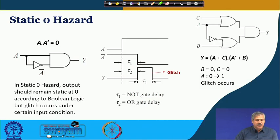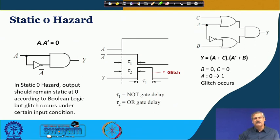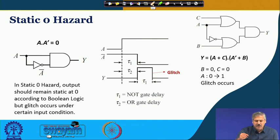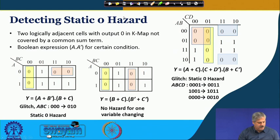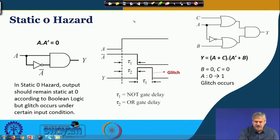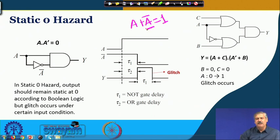In Static-0 Hazard, the condition we find is analogous to what was there for Static-1 Hazard. In Static-1 Hazard, the Boolean expression reduced to something like a plus a-prime equal to 1, which always needed to be at 1. But because of the propagation delay involved in generating a-prime through an inverter, we found a negative-going pulse or glitch occurring.